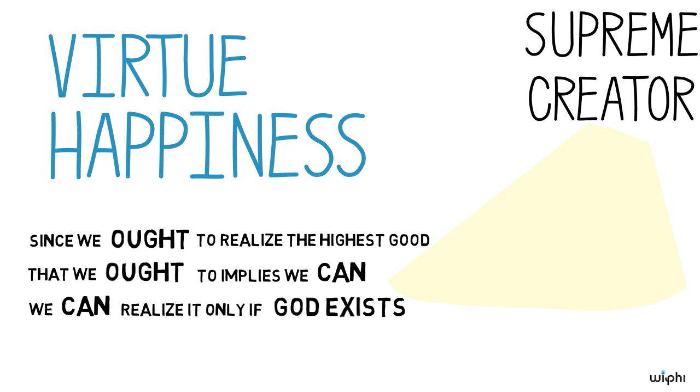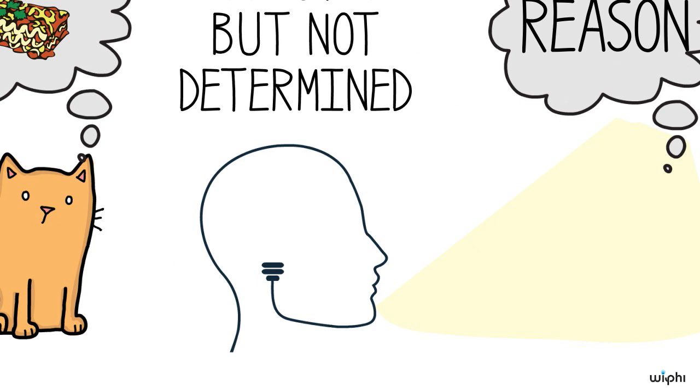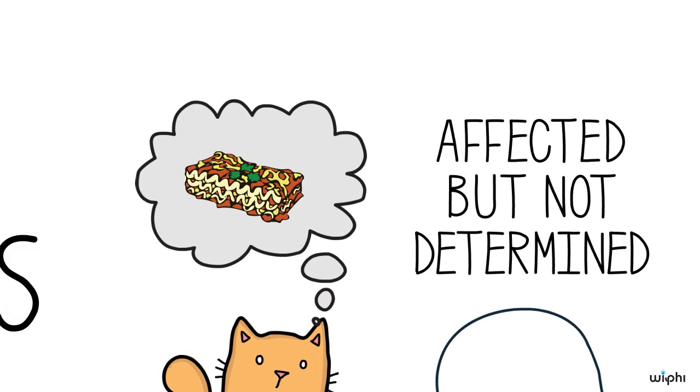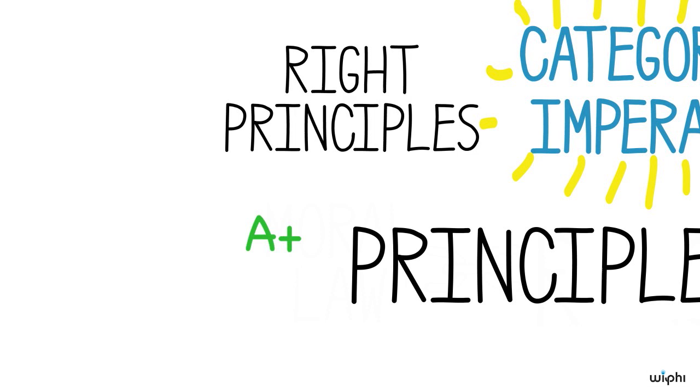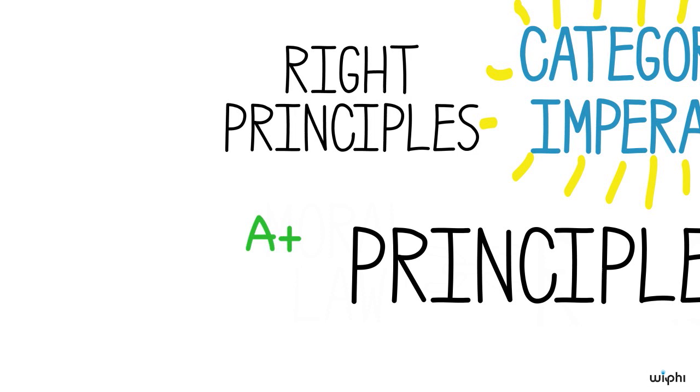Whether or not we buy Kant's argument for how virtue and happiness get united, his understanding of the highest good for human beings is connected to our nature of being both rational and sensible. Reason, which is developed by living in civil society, allows us both to generate the moral law and to determine which principles of action are consistent with it. The strength to set aside our desires and act on these principles comes from within as well.